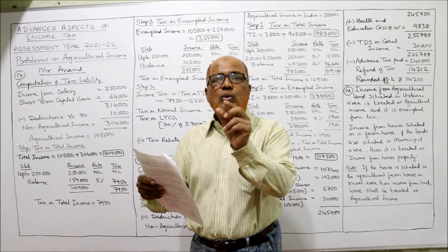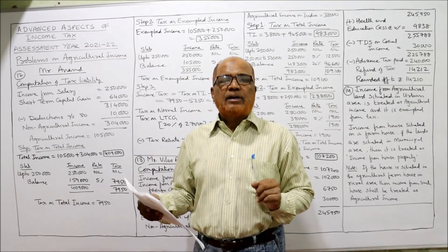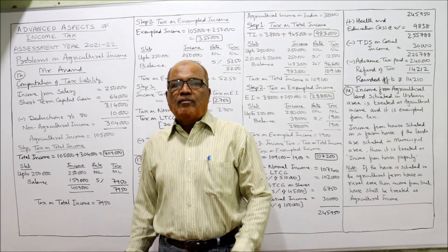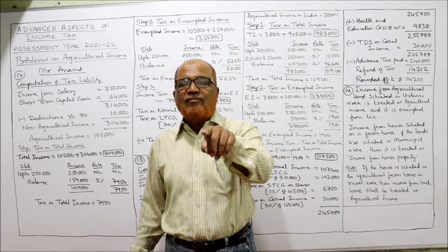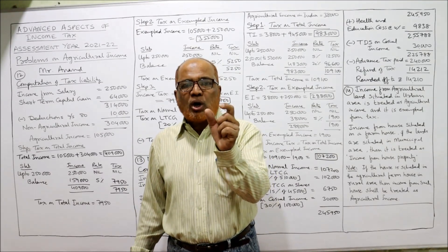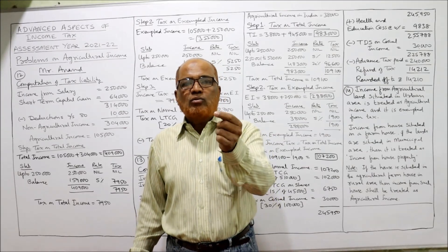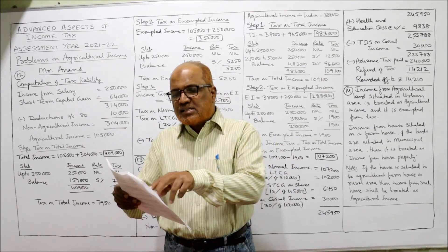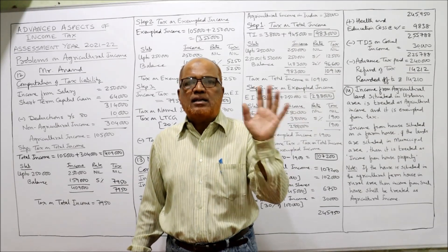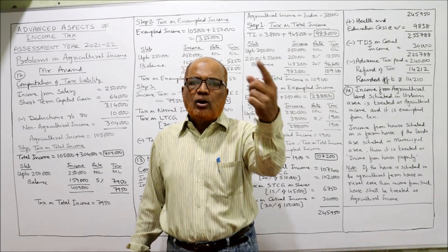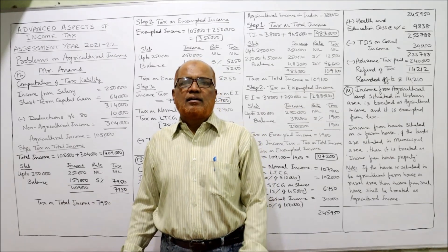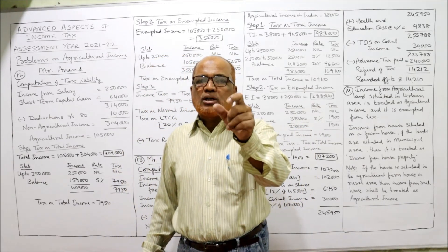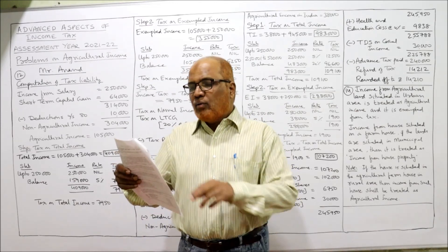Short-term capital gain on shares carries a flat rate of 15%. However, if only short-term capital gain is given — without specifying shares — it will be included along with other incomes and slab rates will apply. In this problem, only short-term capital gain is given with no mention of shares, so this short-term capital gain will be included with other incomes like income from salary. There is no special rate of 15% here. In the previous problem we took 15% because that was short-term capital gain specifically on shares.